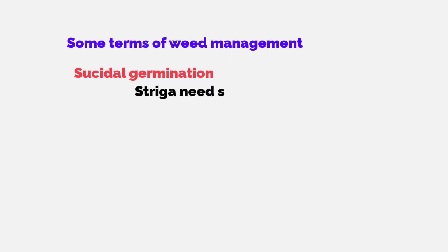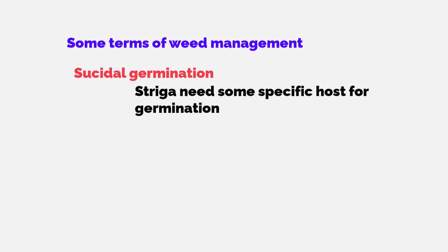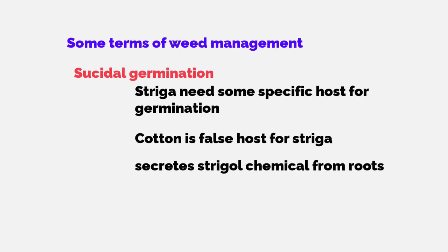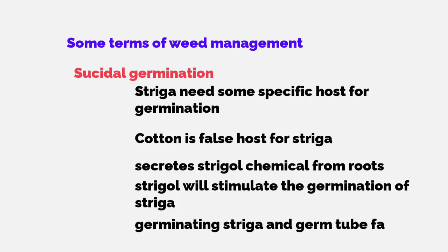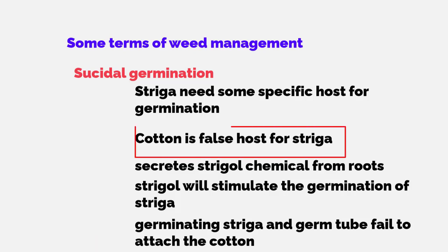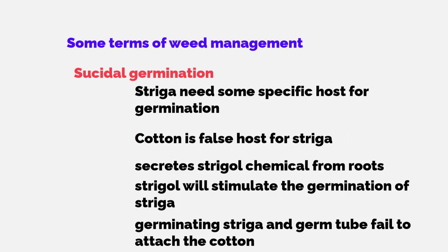Suicidal germination is a very important concept. Striga needs a specific host, and cotton is a false host of Striga. When cotton is grown, it releases chemicals from its roots, such as strigol, which stimulate germination of Striga. Striga germinates thinking there is a suitable host, but the germ tube fails to attach because cotton is not a real host. Without a suitable host, the germinating Striga seedling dies. This is called suicidal germination — cotton is used as a false host to stimulate Striga to germinate and die.